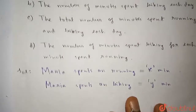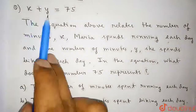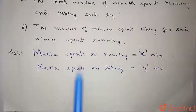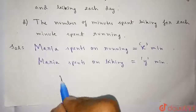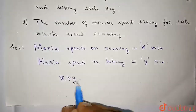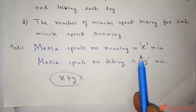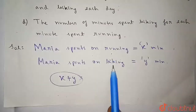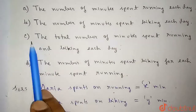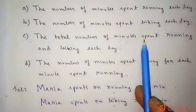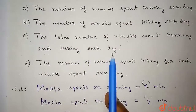So, x plus y equals to 75 represents the total number of time she spends on running and biking. That is, x plus y is the total number of minutes she spends on running and biking. So in option C it is given the total number of minutes spent running and biking each day, so option C is the correct option.